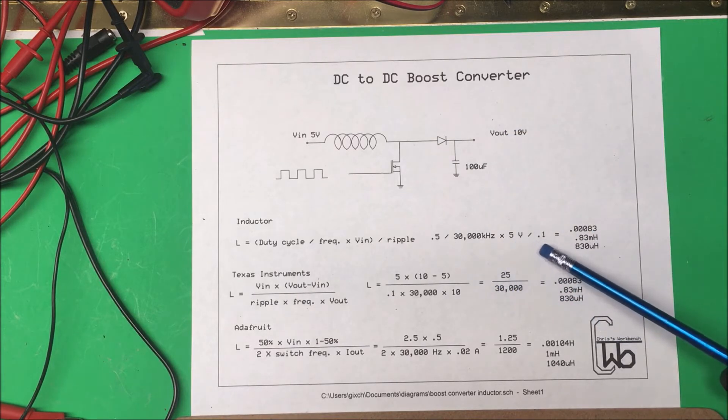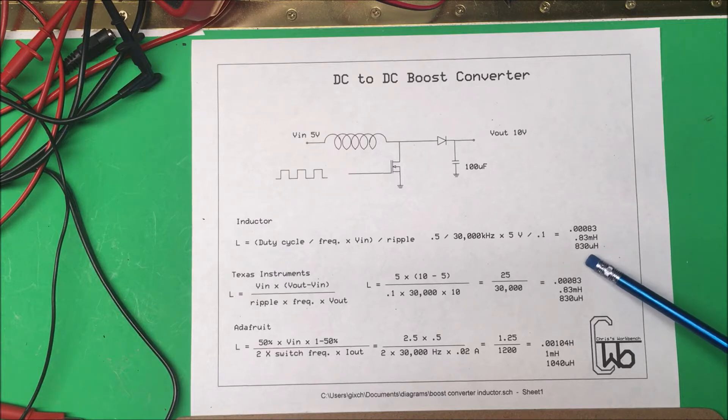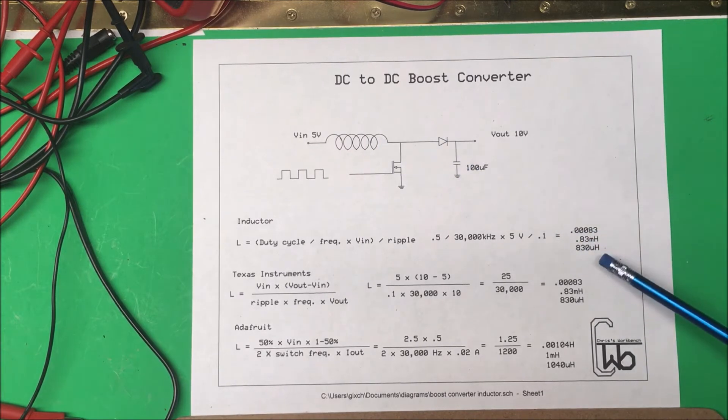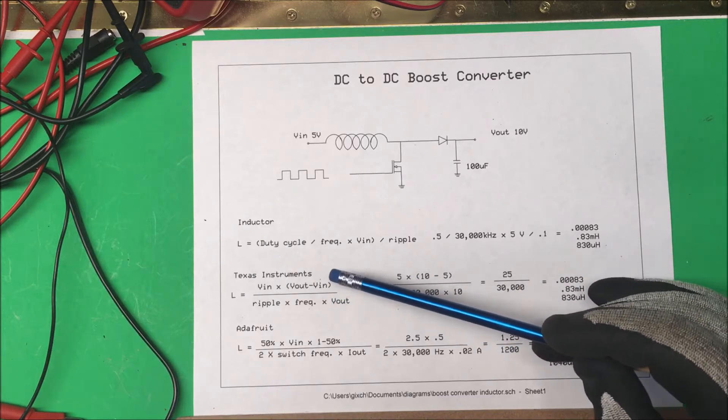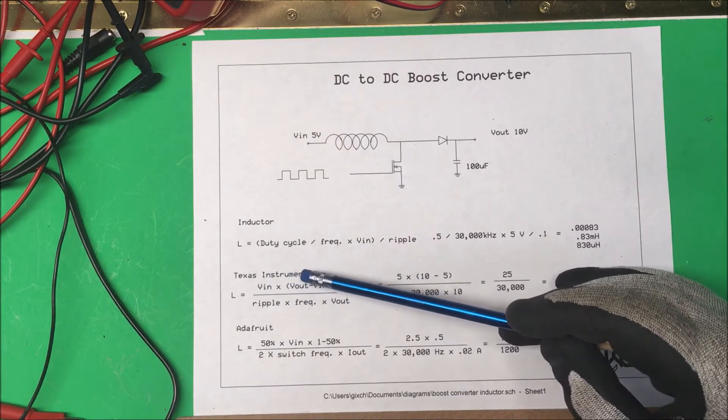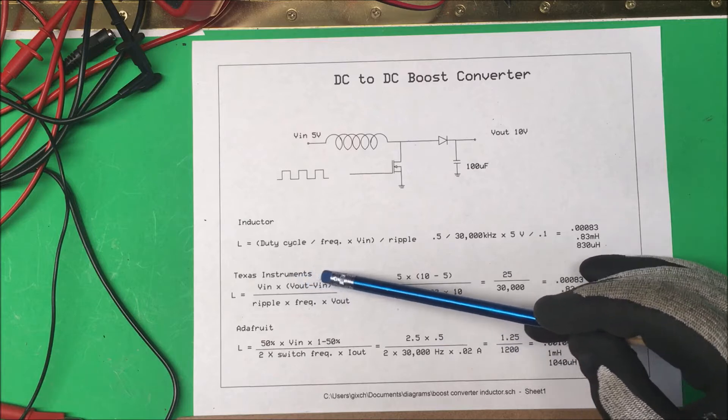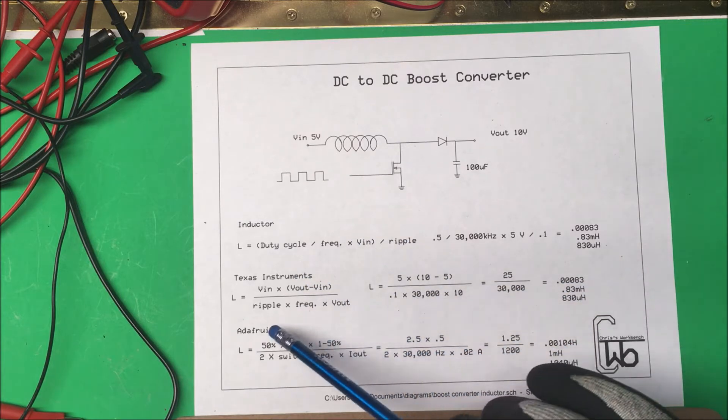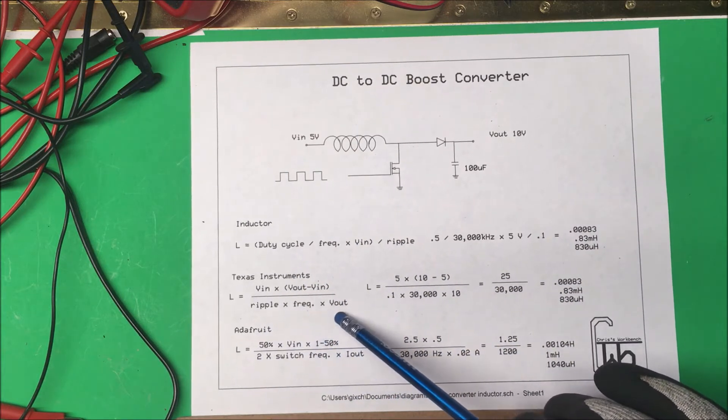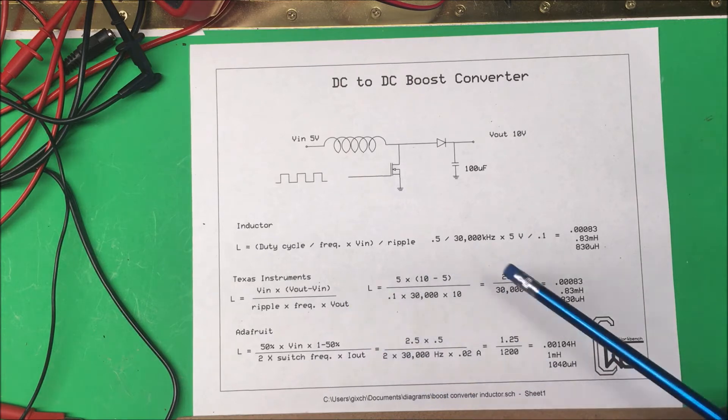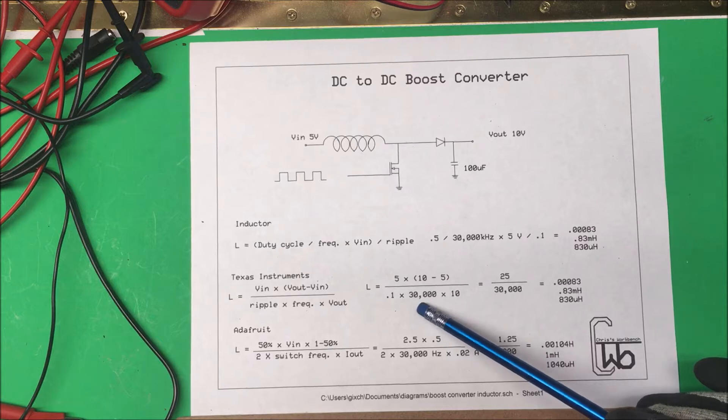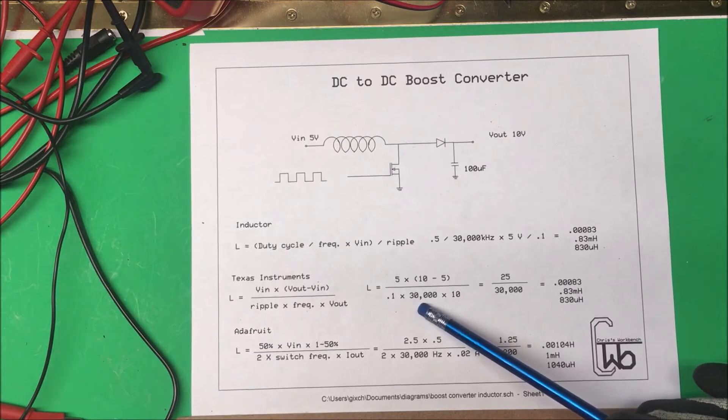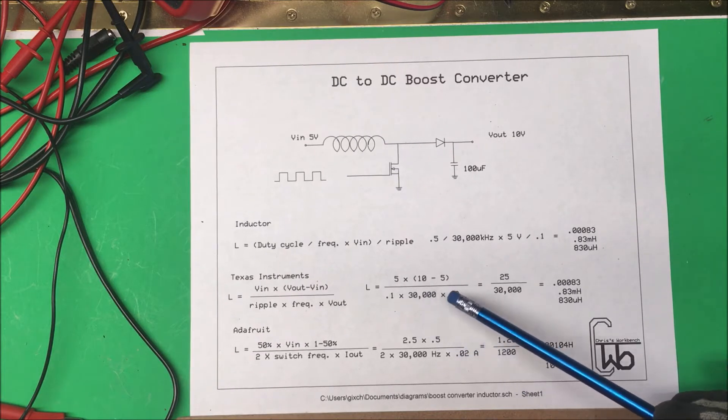I put those numbers in and get 830 microhenries for the inductor. Texas Instruments does it differently: V in times V out minus V in, divided by the ripple times the frequency times the output voltage. If you plug all those numbers in, using 30 kHz for my frequency, it comes out to 830 microhenries, same as this.